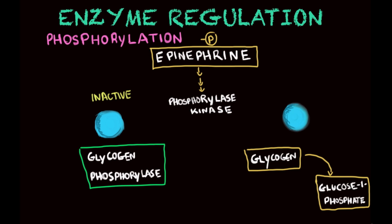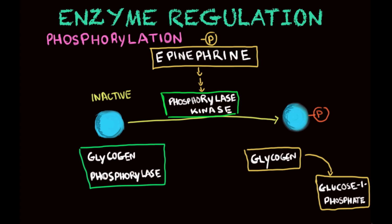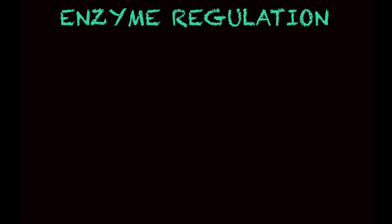The important lesson here is that glycogen phosphorylase — the enzyme that helps glycogen break down into glucose — is usually found in the inactive state. Once epinephrine is in the cells, phosphorylase kinase adds a phosphate group to glycogen phosphorylase. Once this phosphate group is added, glycogen phosphorylase becomes active, and glycogen can then proceed to glucose-1-phosphate and ultimately to the energy form the body needs.